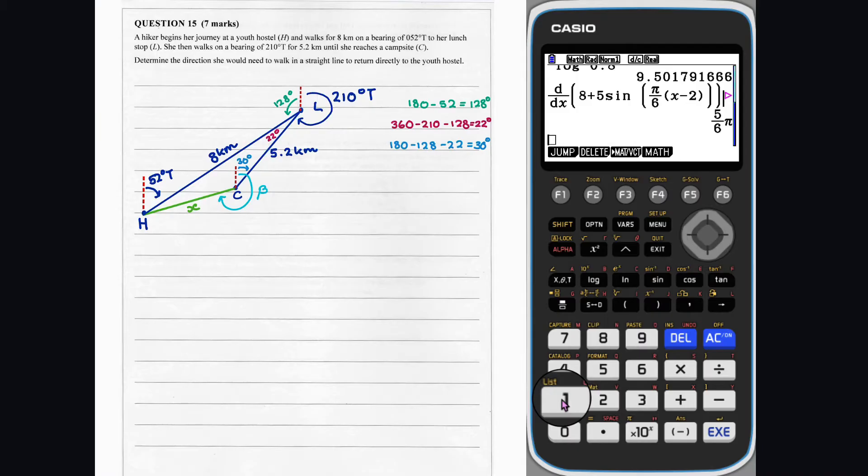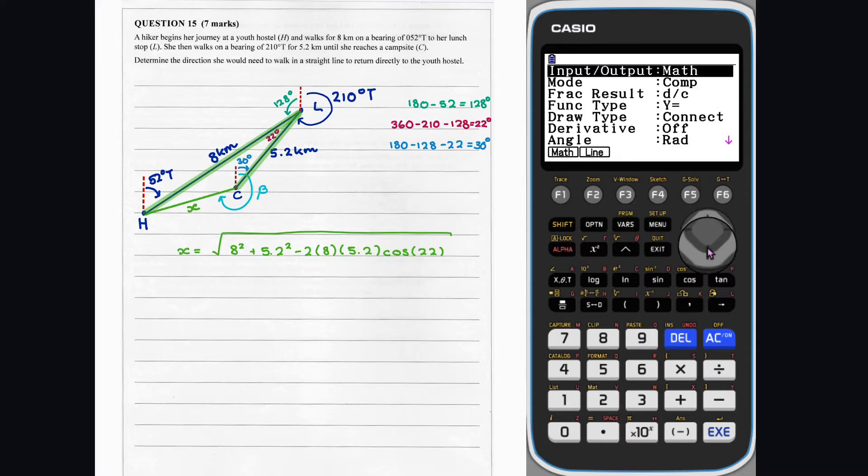Now we can work out the length of x using the cosine rule. Note here that the angle needs to be in degrees, so our calculator must be set to degrees.